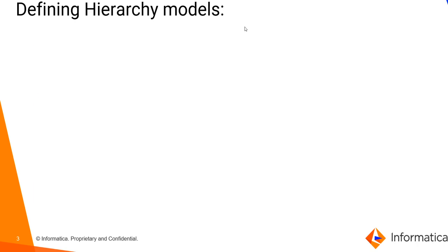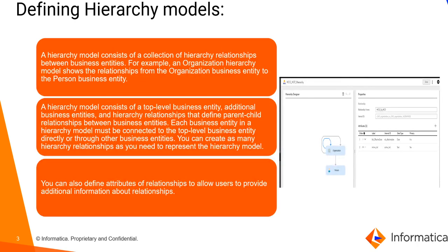Defining a hierarchy model — what is a hierarchy model? It consists of a collection of hierarchy relationships between business entities. For example, an organization hierarchy model shows the relationships from an organization business entity to a person business entity. Each business entity in a hierarchy model must be well connected to the top-level business entity directly or through other business entities. You can create as many hierarchy relationships as needed, and also define attributes of relationships to allow users to provide additional information.